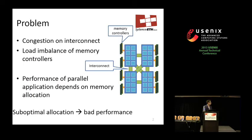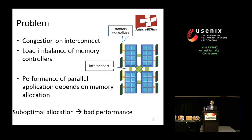The problem I'm going to talk about today are NUMA machines. This one has four NUMA nodes and eight memory controllers. What can happen on such a machine is that if you allocate all the memory on just one of these NUMA nodes, you can get congestion on the interconnect as well as load imbalance of memory controllers, and your performance can suffer.